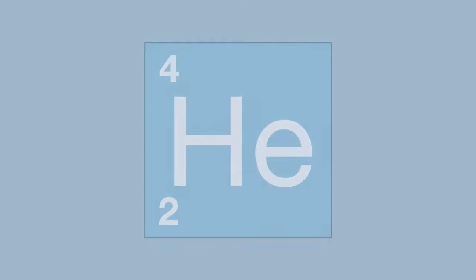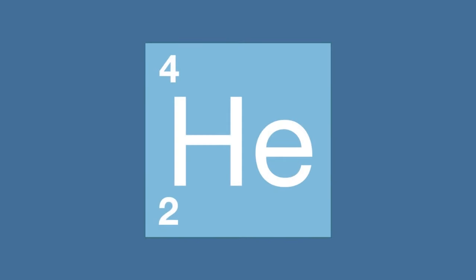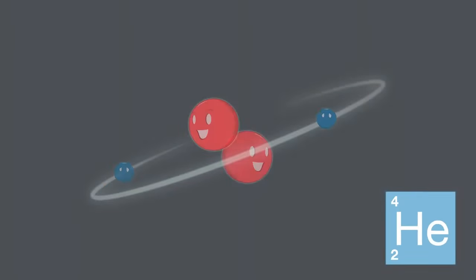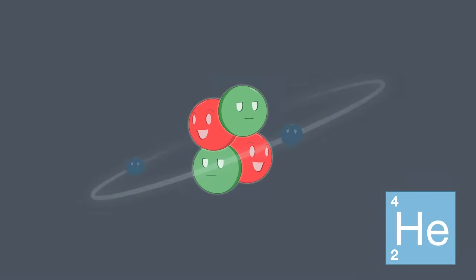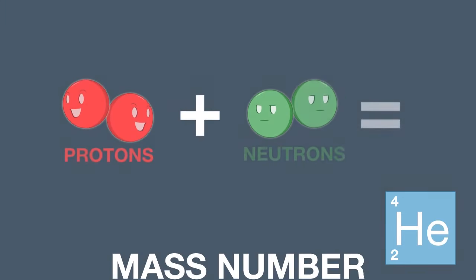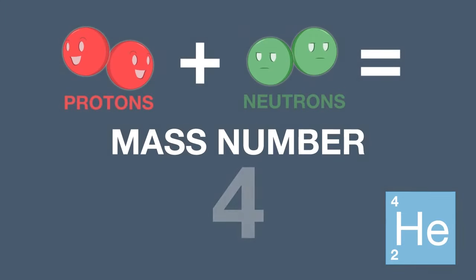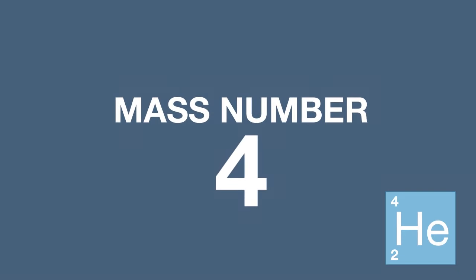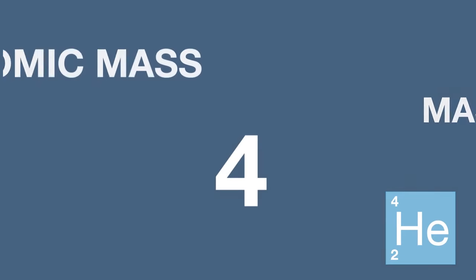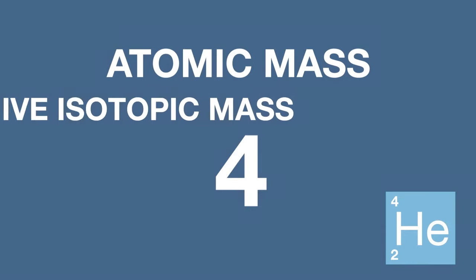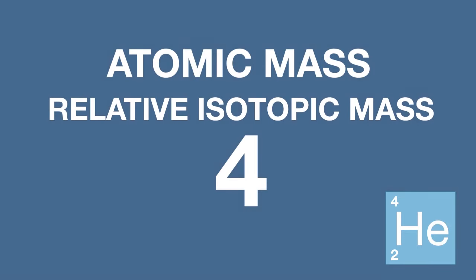As a quick reminder, here is a helium atom. It has two protons and two neutrons in the nucleus. This gives it a mass number of four.